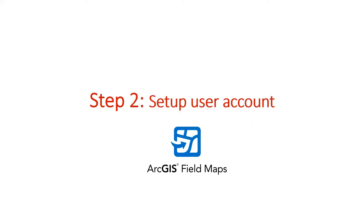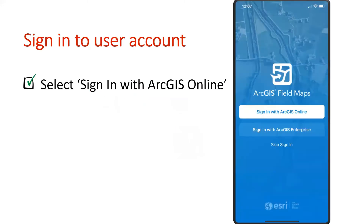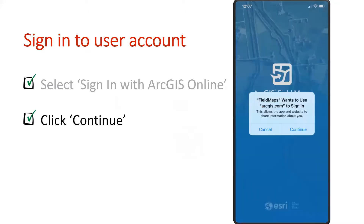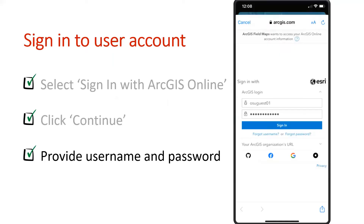After downloading the app, the next step will be to install it on your phone. When you start the app for the first time, you will see this screen. Click on Sign in with ArcGIS Online. Next, it will ask your permission to use ArcGIS.com for signing in. Please click Continue — it's redirected to the ArcGIS website. Provide the username and password that we sent you in the email.